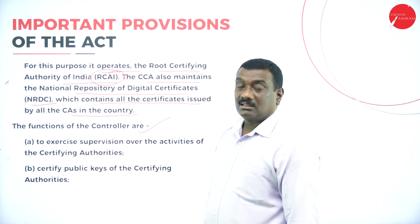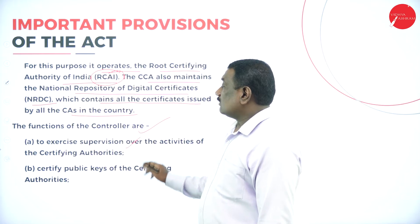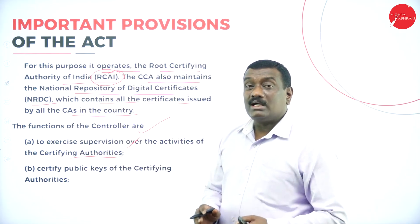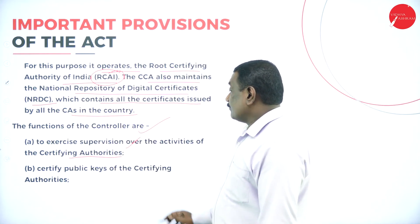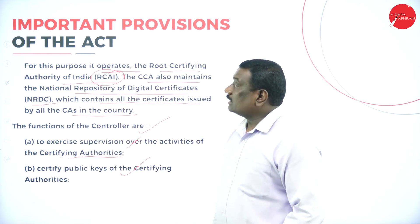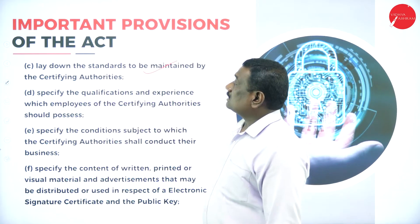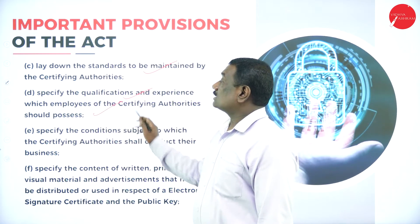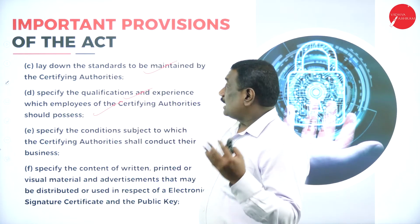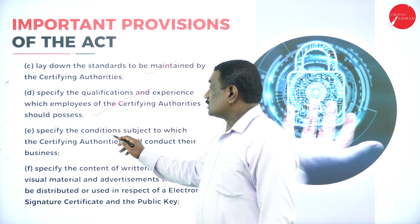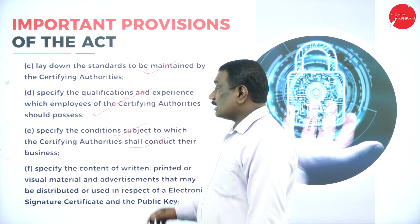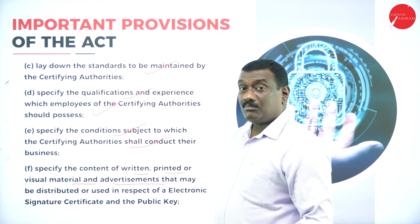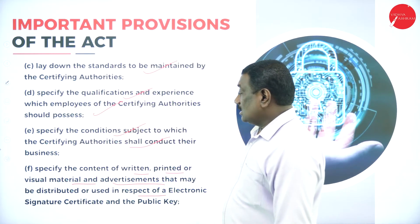The functions of the Controller of Certifying Authorities include: first, to exercise supervision over the activities of the certifying authorities; second, to certify the public keys of the certifying authorities; third, to lay down the standards to be maintained by the certifying authorities; fourth, to specify the qualifications and experience which the employees of certifying authorities should possess; and fifth, to specify the conditions subject to which certifying authorities shall conduct their business, as well as the content of written, printed, or visual material and advertisements used in respect of electronic signature certificates and public keys.